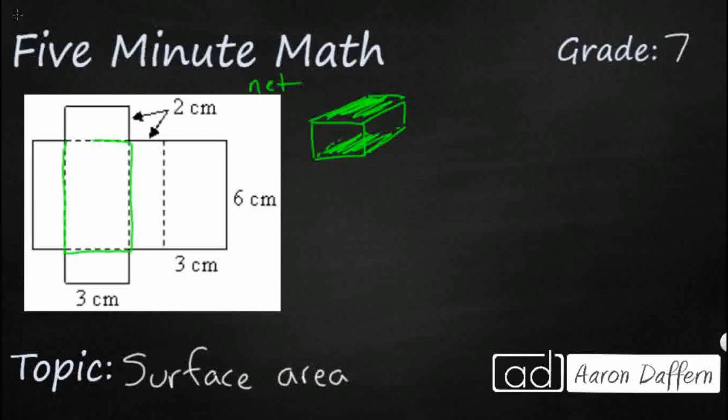So if we want to find the total surface area of this rectangular prism, we take a look at this net, which is just the shape opened up, and we look at the surface area of each of the different components. For this top and bottom, those are identical. Since we are going to be looking at rectangles, we can look at either base times height or length times width.